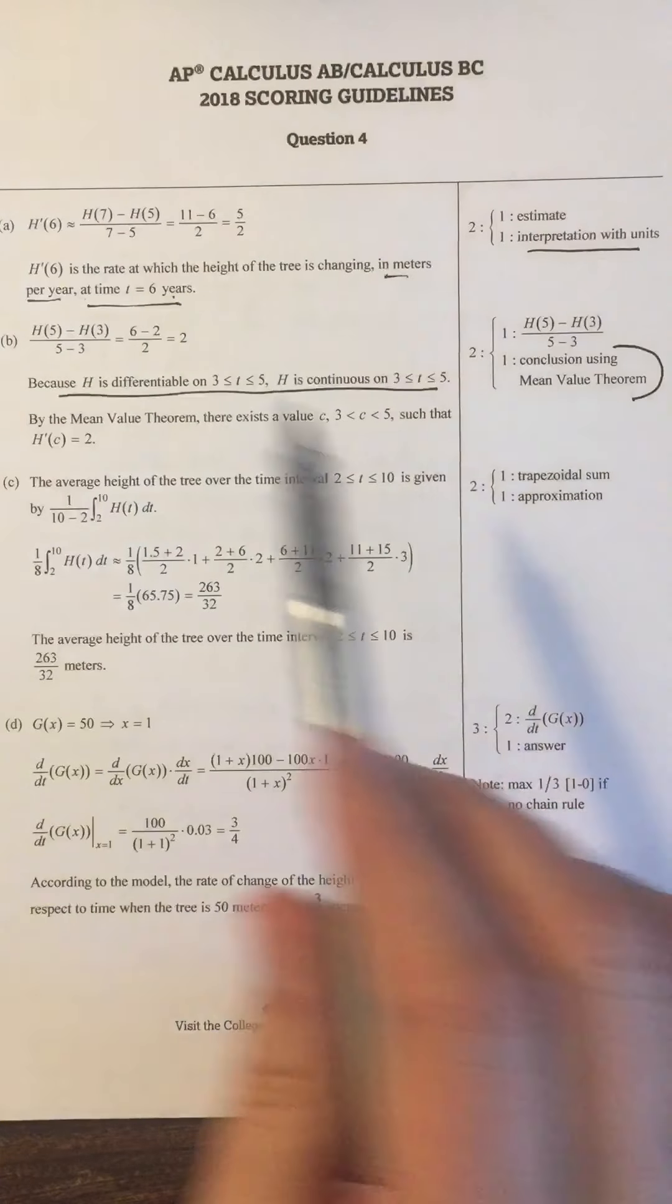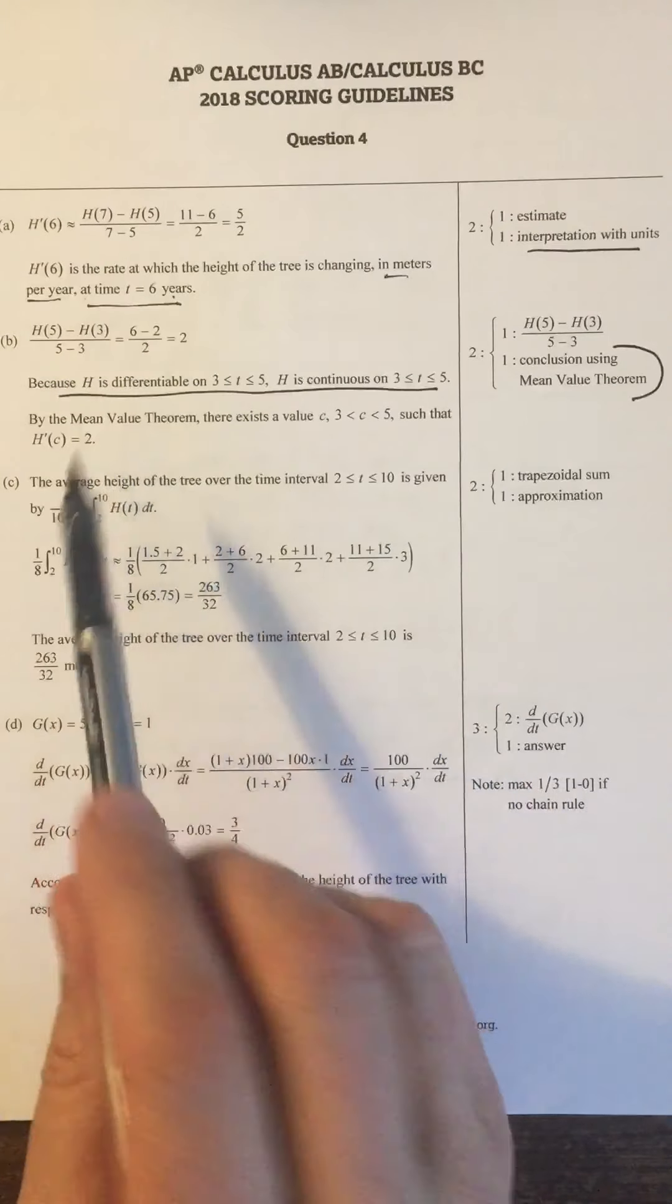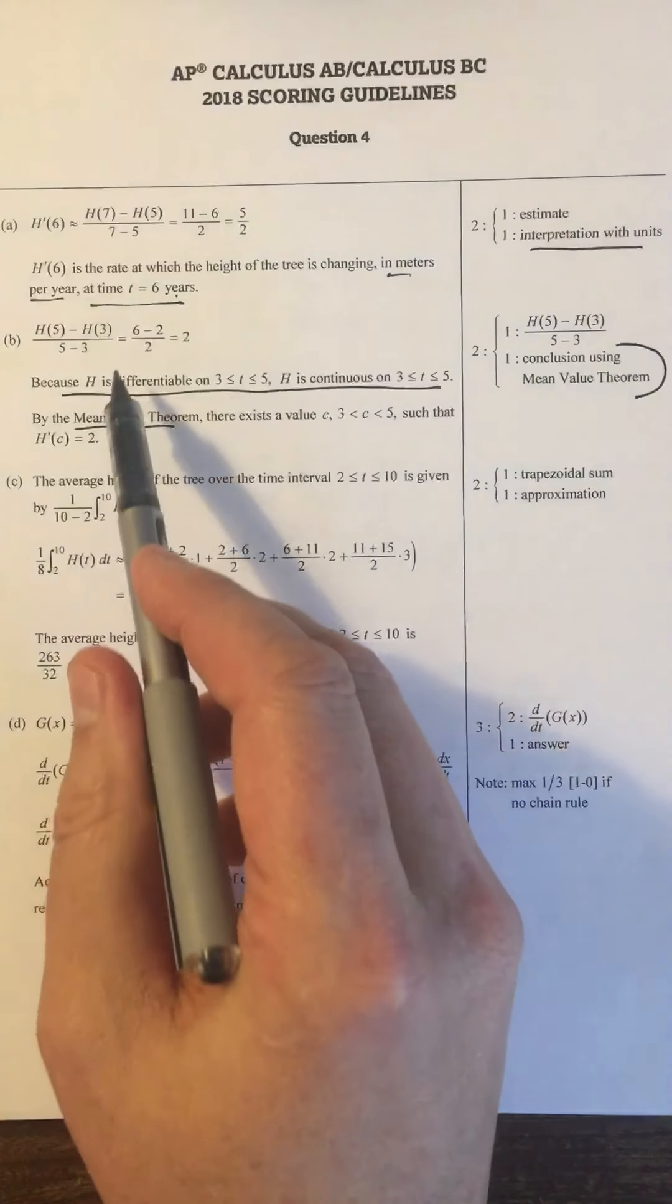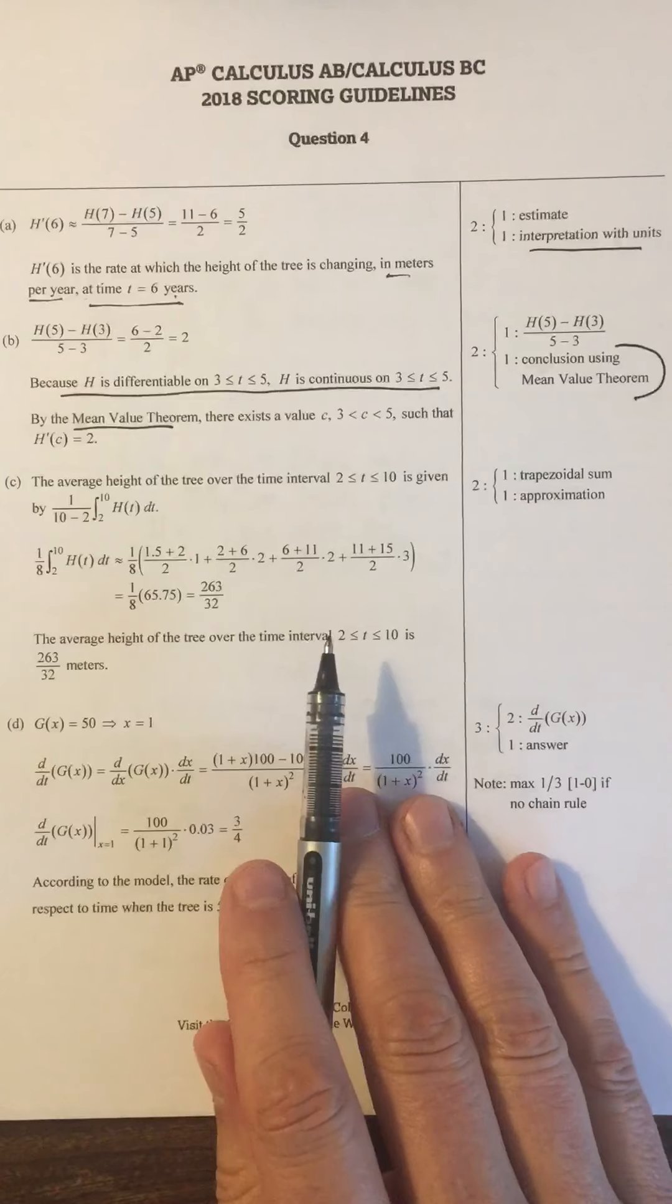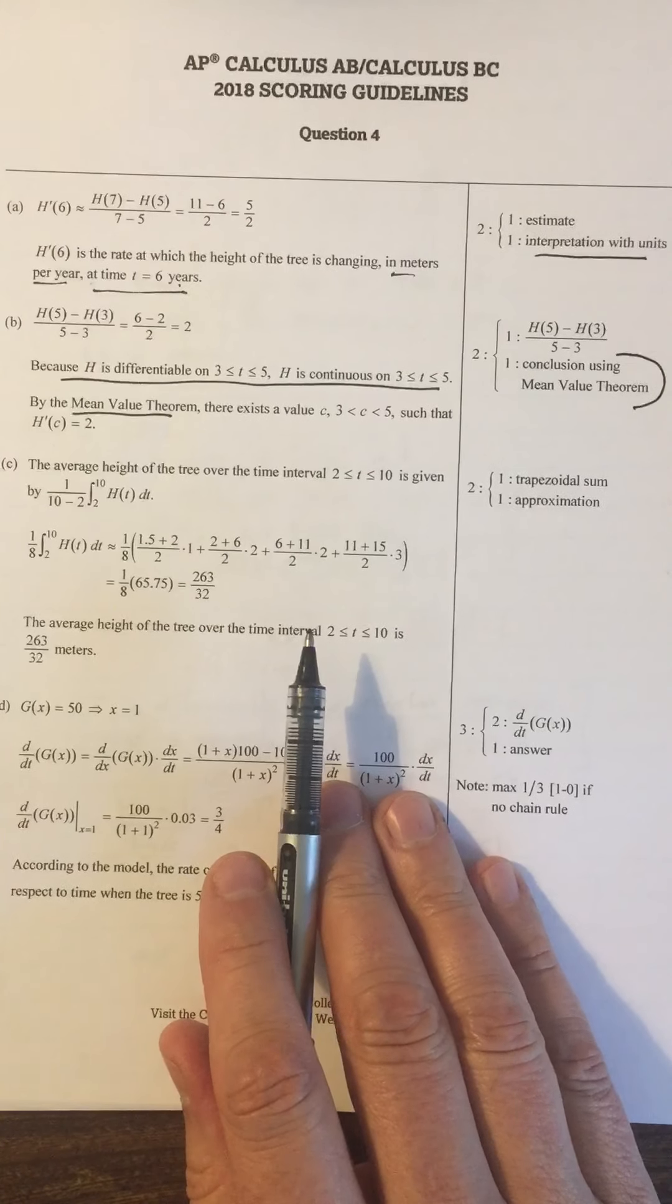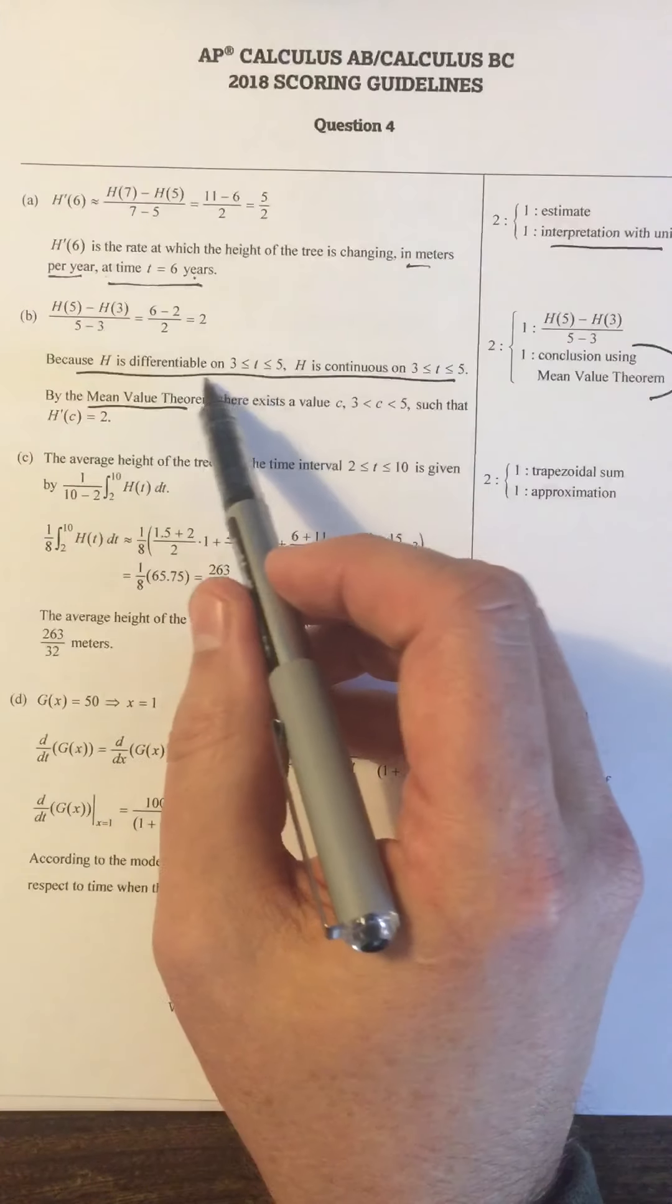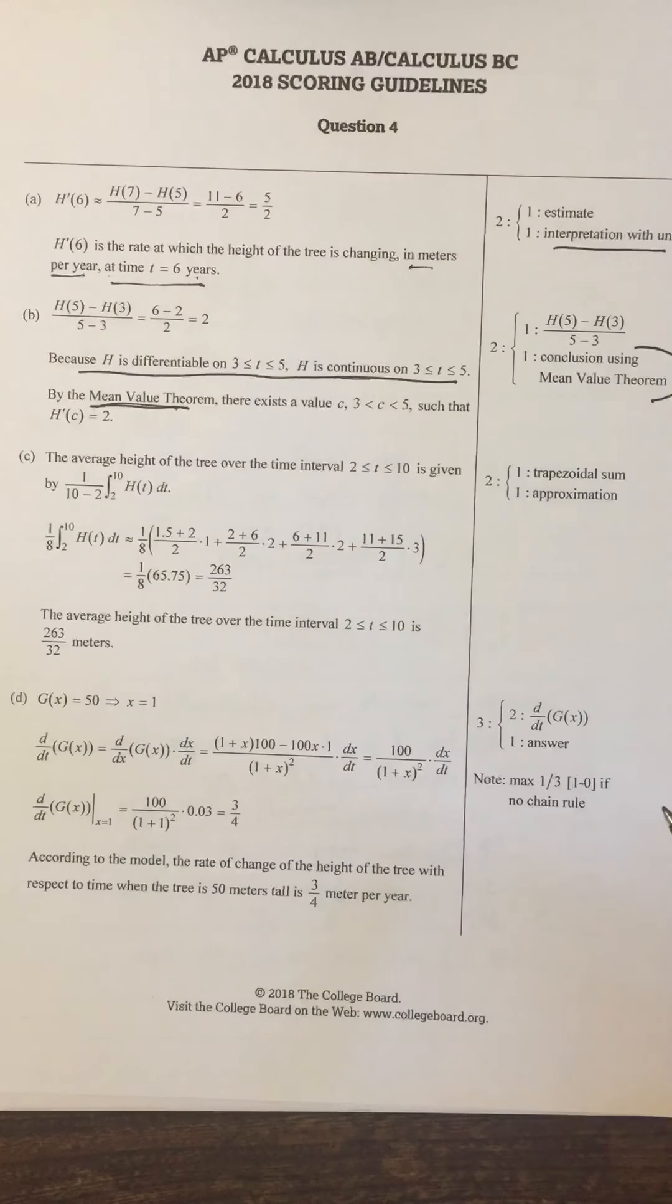Everything else is pretty straightforward. They did the ratio first and then stated the mean value theorem. To me, it makes more sense to state these things first and then do that and then conclude. But that's how they did it. So to get this conclusion using mean value theorem, you have to have differentiable, continuous, and mean value theorem. You have to have all those words there.